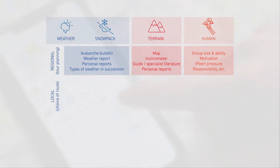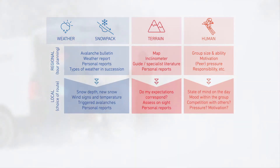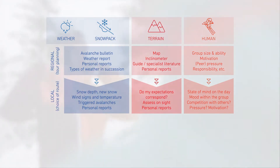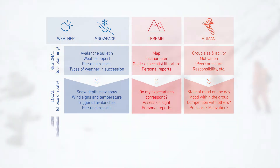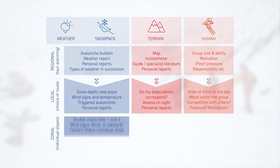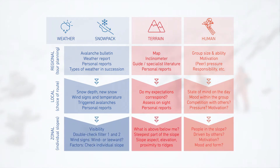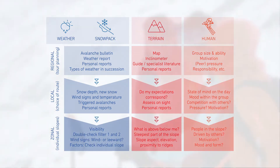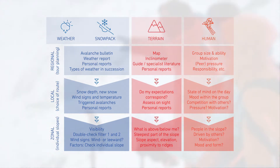The second filter is on site, in the mountains. We go out, we observe, we get an impression, we look at what's going on around us. And the third filter, the third level, is the individual slope. I actually stand in front of my slope and ask: go or no go? And if it's go, what route do I take?